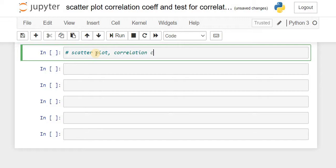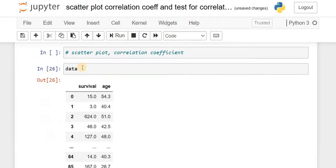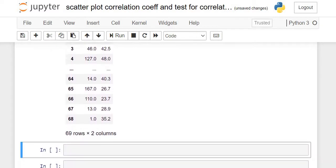Let us consider a dataset with 69 observations of cancer patients who have survived, and the respective age in years is also recorded.